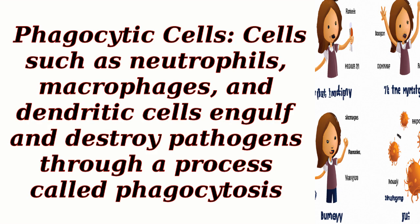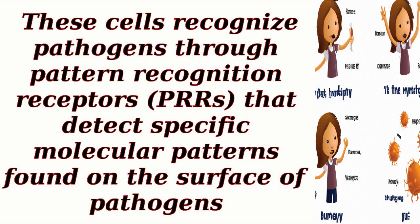Phagocytic cells such as neutrophils, macrophages, and dendritic cells engulf and destroy pathogens through a process called phagocytosis. These cells recognize pathogens through pattern recognition receptors (PRRs) that detect specific molecular patterns found on the surface of pathogens.